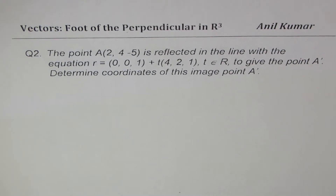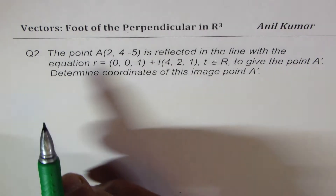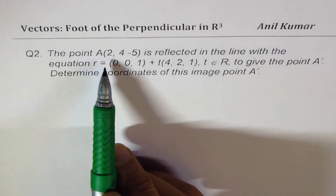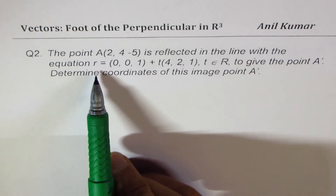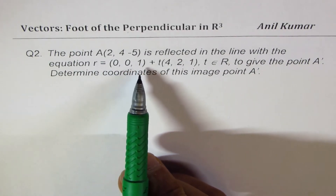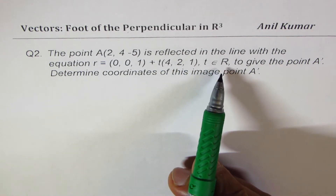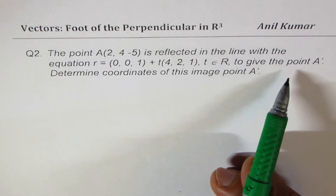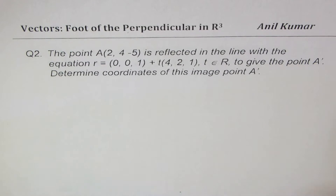I'm Anil Kumar sharing with you a question from my student Anna, and I hope the solution of this question will help many of my viewers. The equation here is: the point A(2, 4, -5) is reflected in the line with the equation R equals (0,0,1) plus T(4,2,1), where T belongs to real numbers, to give the point A dash. Determine the coordinates of this image point A dash.